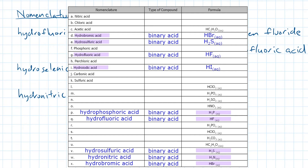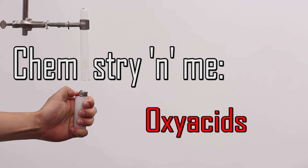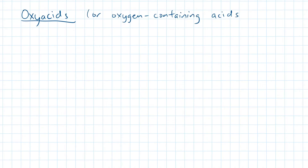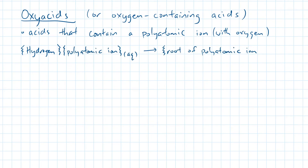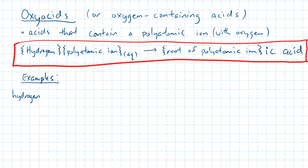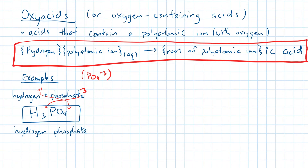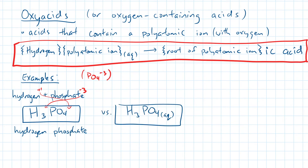Let's talk about the other type of acid. As the name implies, oxyacids are acids that contain oxygen. The first two rules still apply: the compound must contain hydrogen as a cation, and the compound must be dissolved in water. For example, hydrogen plus phosphate — phosphate has a charge of minus three. Using the crossover rule, your answer is H3PO4, which is hydrogen phosphate. But if it gets dissolved in water, the compound now becomes phosphoric acid. Notice there is no hydro in the name. On the other hand, the binary version is hydrophosphoric acid.